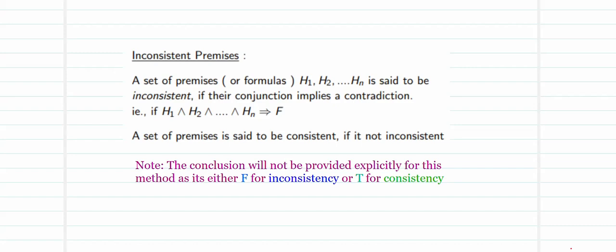A set of premises or formulas h1, h2, up to hn is said to be inconsistent if their conjunction implies a contradiction. So if all the premises together lead us to a false answer called a contradiction, then we say that the given set of premises h1 up to hn are inconsistent with one another. On the contrary, if it is not inconsistent, then we say it to be consistent in nature.